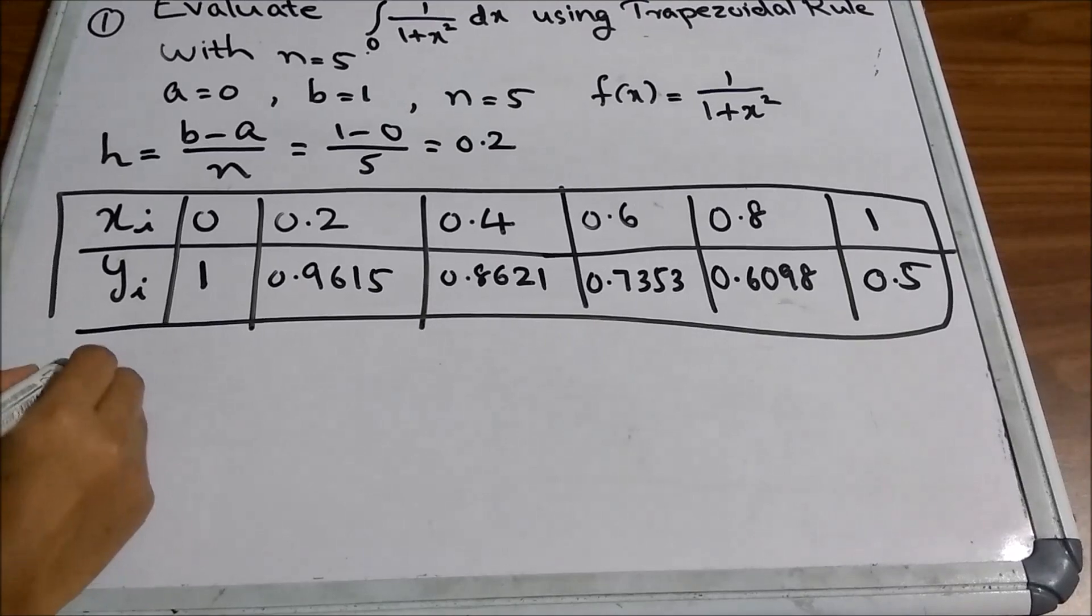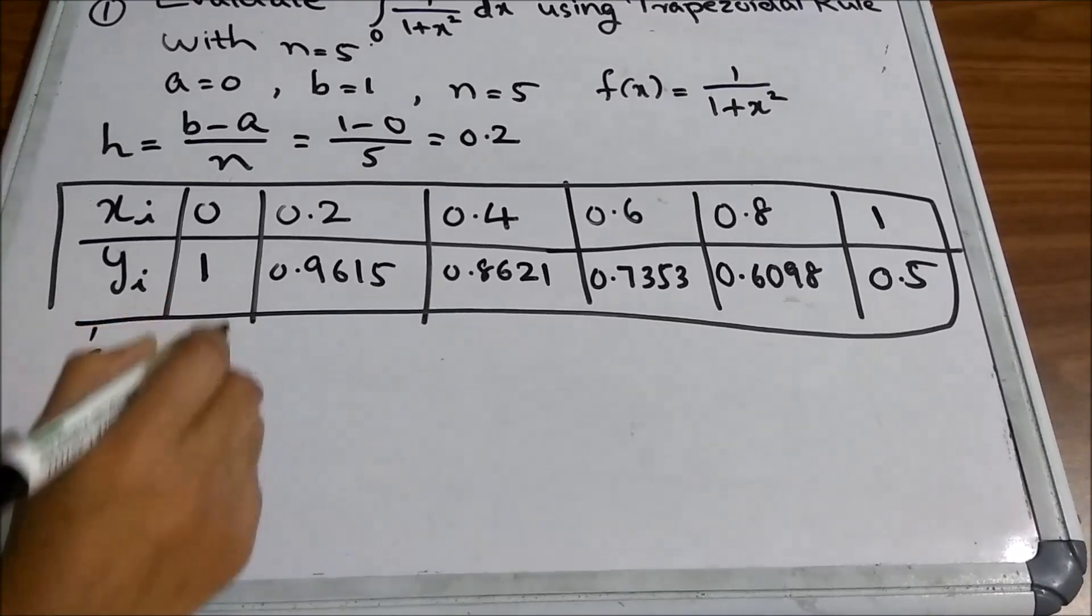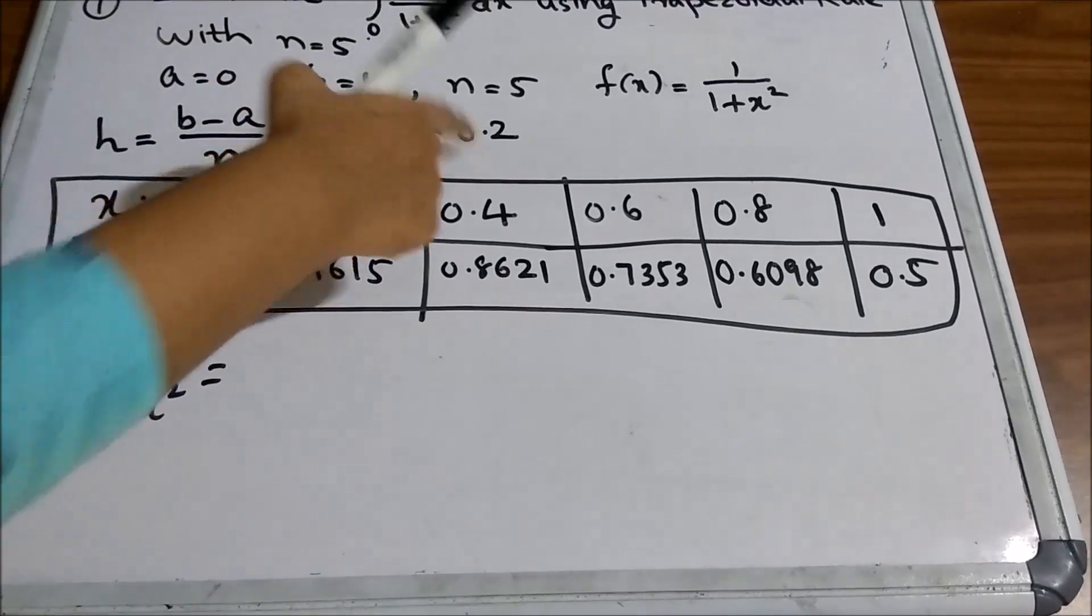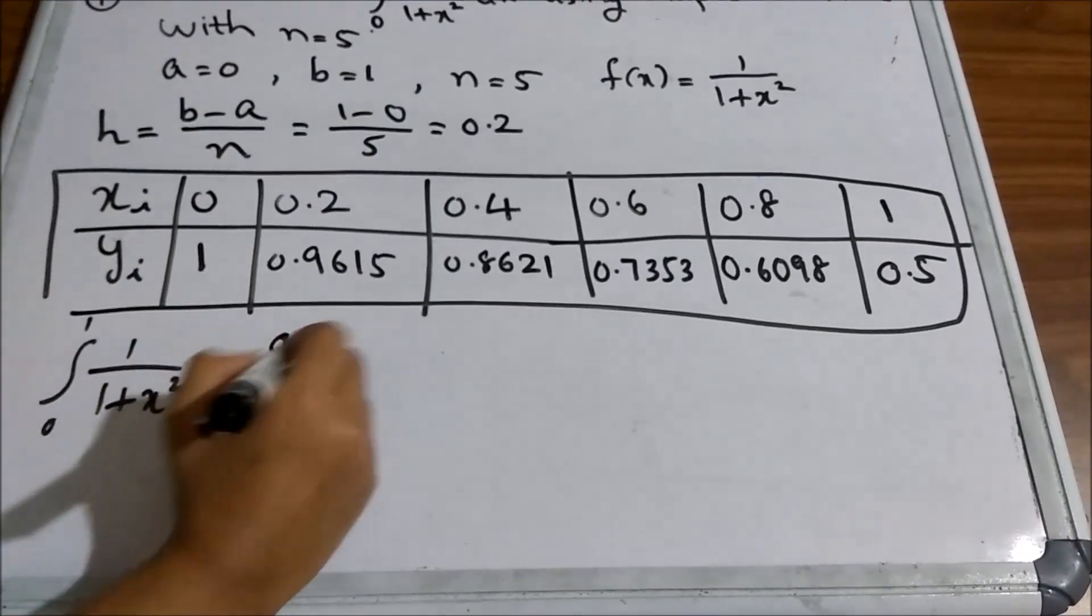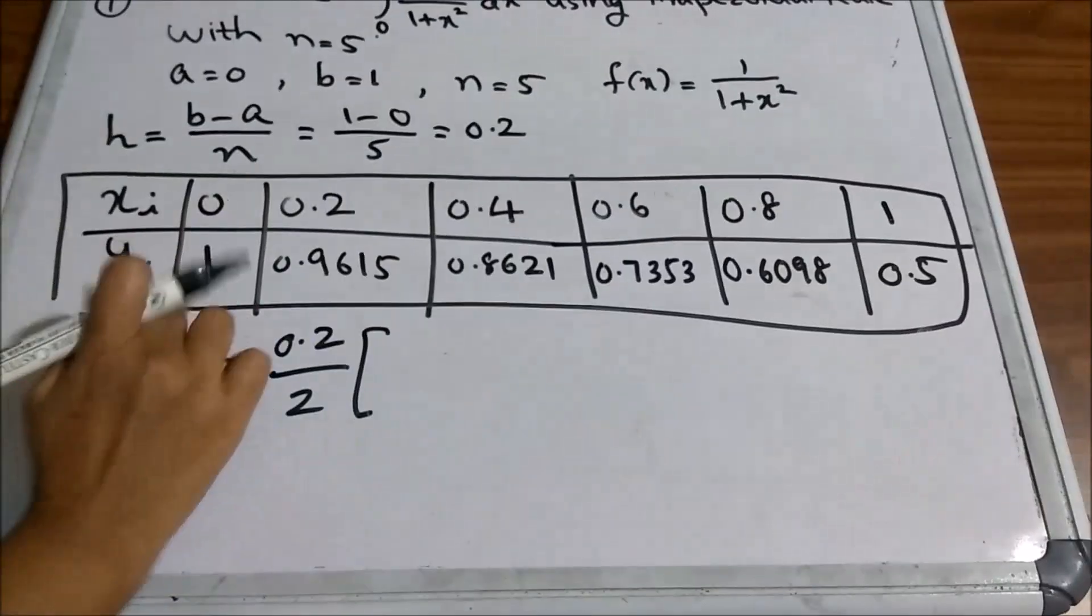Now, you can apply the formula integral 0 to 1, 1 by 1 plus x square is equal to h by 2. Here, h is 0.2, so 0.2 by 2 into y0 plus yn. So, y0 is 1,